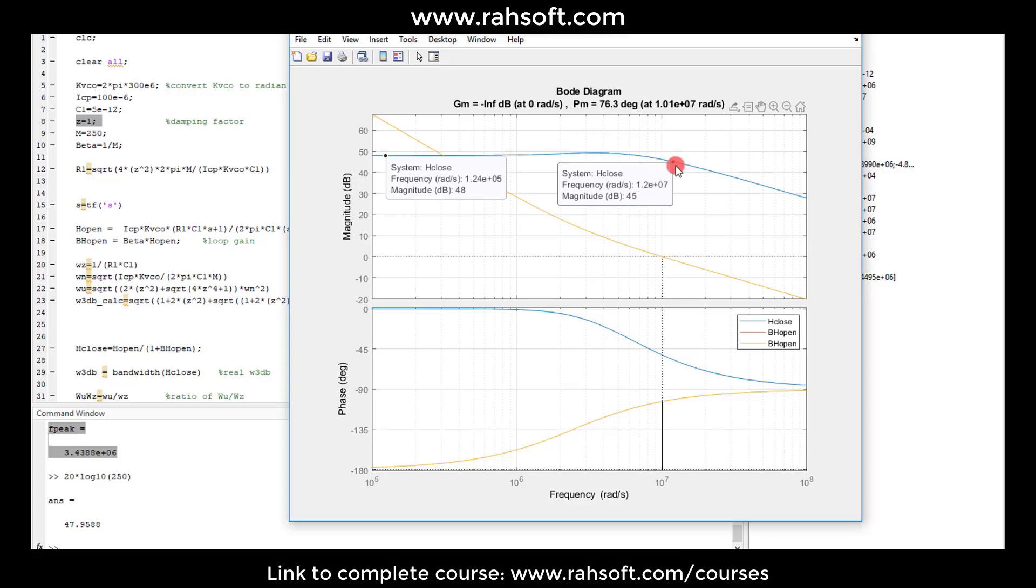So this is 12 megahertz. And as you see, we expect that this value is very close to a unity gain bandwidth, which it is very close.